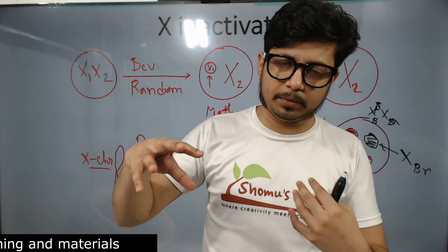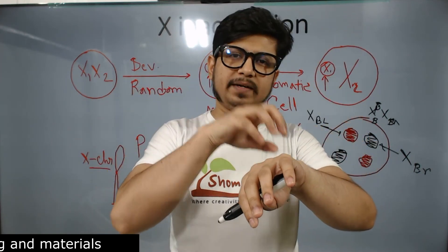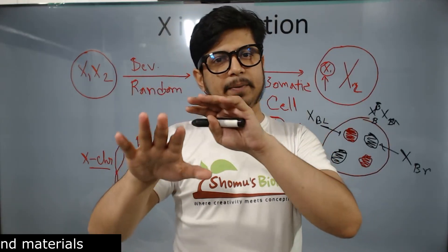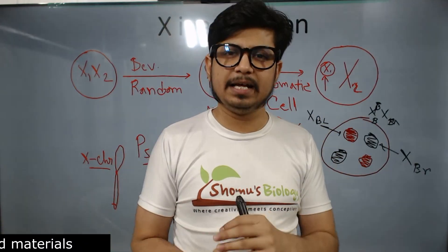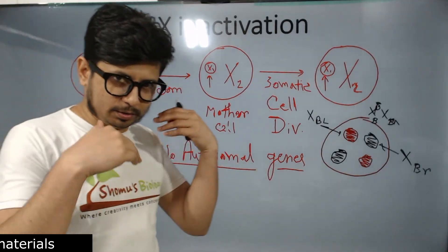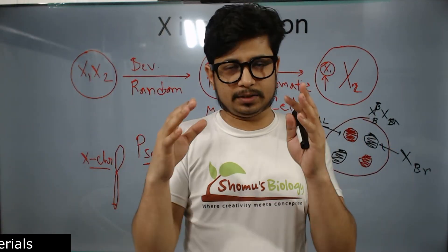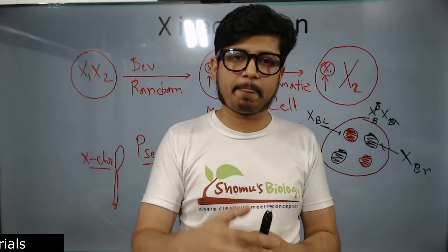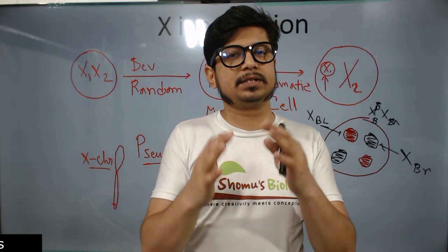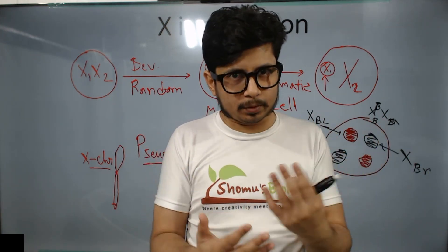Simply put: in the calico cat, where the red or brown color appears, the gene for red is active and black is inactive; where black appears, black is active and red is inactive. That's how easy it is to understand X-inactivation, also known as dosage compensation. This is only true for mammals and for every single somatic cell. In other organisms like Drosophila and C. elegans, the idea of dosage compensation also exists but through different approaches.